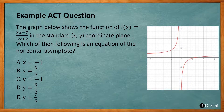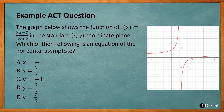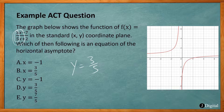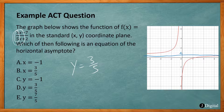Another example ACT question: For the function f(x) = (3x - 7) / (5x + 2), which is the equation of the horizontal asymptote? Since the degree of the numerator and denominator are the same, the horizontal asymptote is the ratio of the leading coefficients: y = 3/5. Be careful — don't pick x = 3/5; it's a horizontal asymptote, so it needs to be y = 3/5.